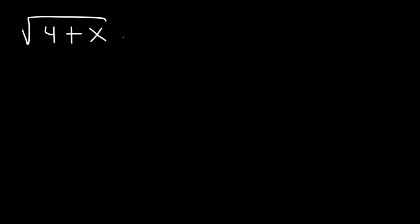If you set 4 plus x equal to 0, x is equal to negative 4. So there's only one x value that will give you a value of 0. When you see this, simply set the inside equal to or greater than 0. You won't need a number line for this example. Solve and find the value of x. If we subtract both sides by 4, x is equal to or greater than negative 4.